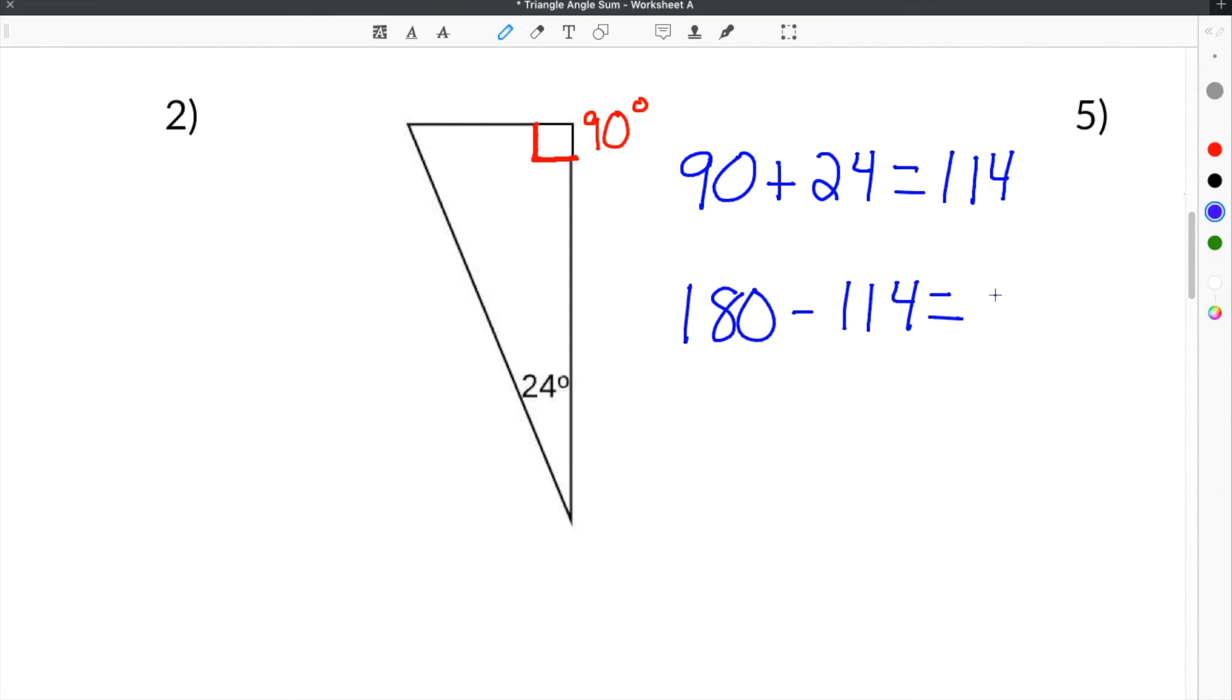180 minus 114 is 66. So this angle here has to be 66 degrees, because all three angles must add up to 180. So 66 plus 24 plus 90 equals 180, so we know that's our answer.